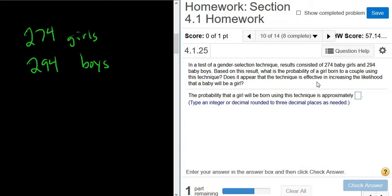Based on this result, what is the probability of a girl born to a couple using this technique? And then it goes on to ask a follow-up question, which we'll read later. So the probability that a girl will be born, okay, so we want the probability of a girl. A little bit harder. It's a fraction.